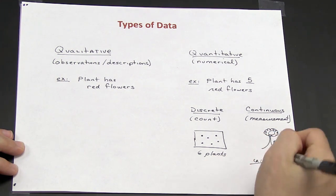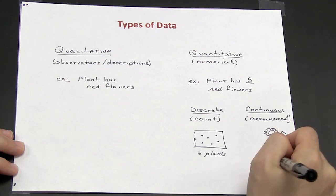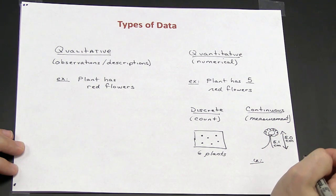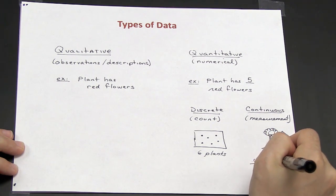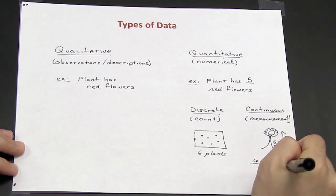Two examples of continuous data that is typically used in a lab is time and length.